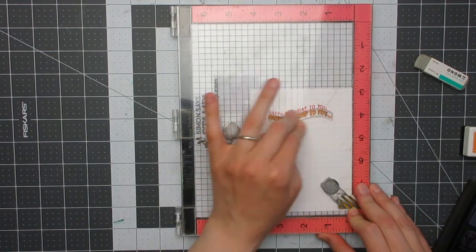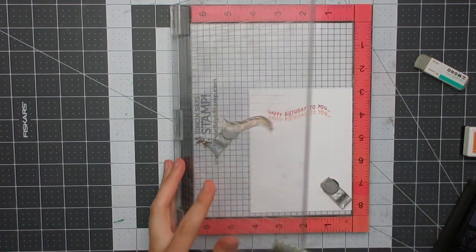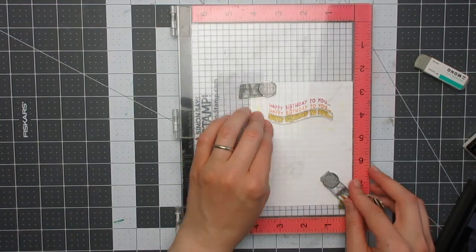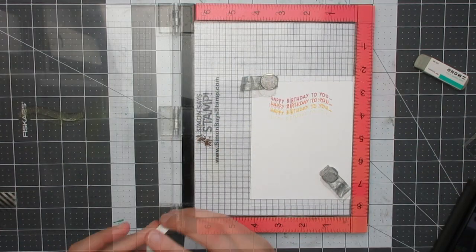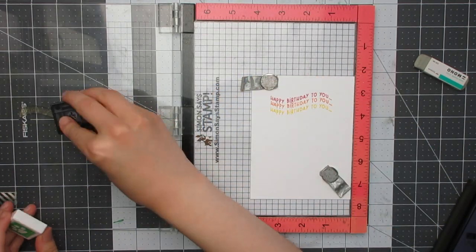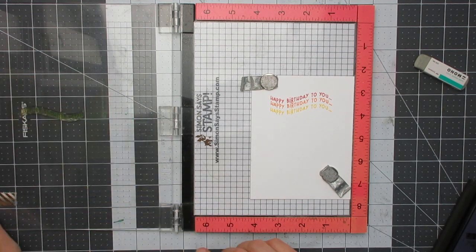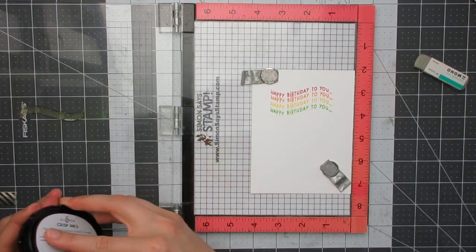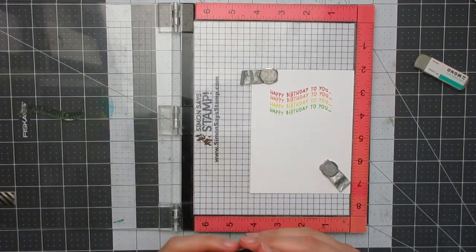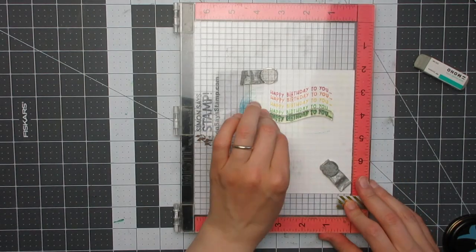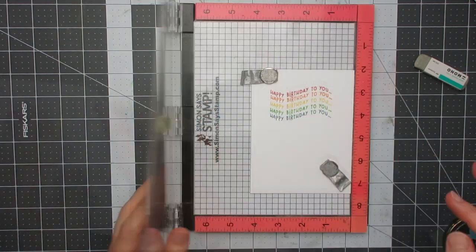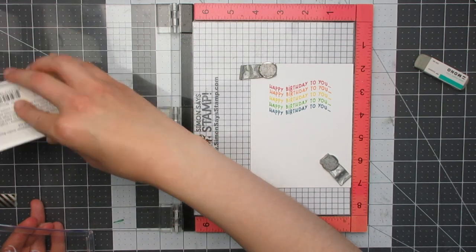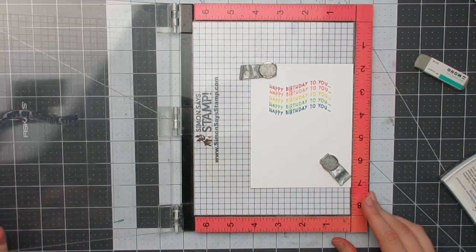I started with Ruby Red ink from Altenew and then I'm using several Simon Says Stamp inks for the orange and the yellow and the green. I will have all the ink colors and all the other products I have used linked in the description box below if you'd like to find them for yourselves. Some of those links will be affiliate links if I can find affiliate links for them, I will use affiliate links just because it helps to support me and my crafting at no extra cost to you. Also in the description box will be all the details on the collaboration and all the information for the other videos in the hop so that you can see what everyone else made for World Music Day.